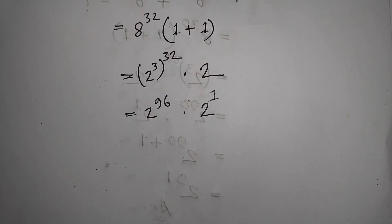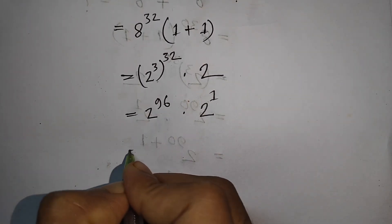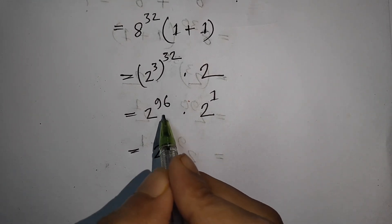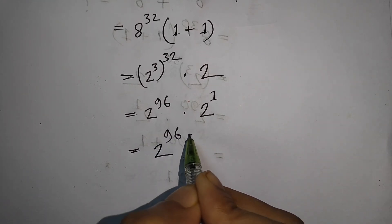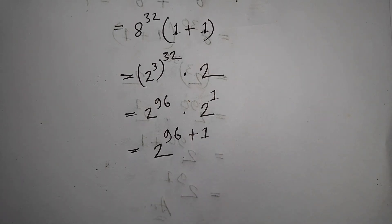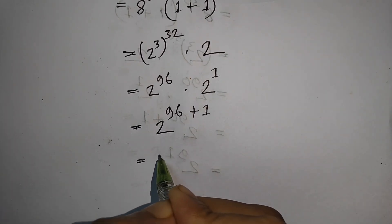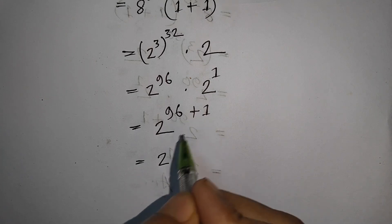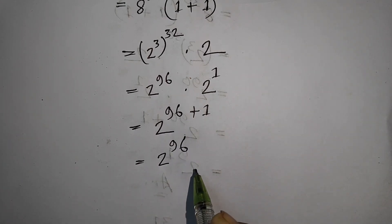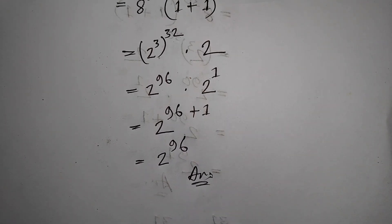We see that 2 to the same base but different power. So we can write here 2 to the power 96 plus 1, that means 2 to the power 97. So 2 to the power 97 is the correct answer.